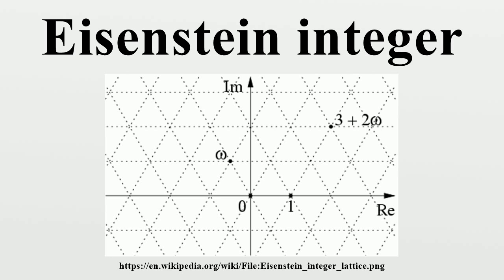Quotient of C by the Eisenstein integers. The quotient of the complex plane C by the lattice containing all Eisenstein integers is a complex torus of real dimension 2.